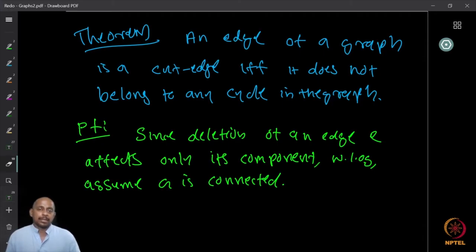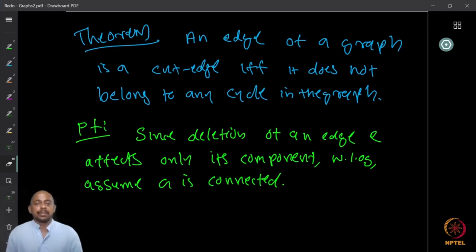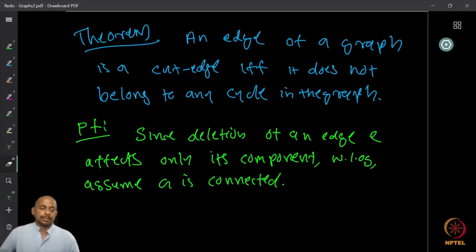If you think about cut edges, you can show the following theorem: an edge of a graph is a cut edge if and only if it does not belong to any cycle in the graph. Can you think of a similar result for cut vertices? A cut edge is also called a bridge. So if E is a bridge, it is an edge whose removal increases the number of components.